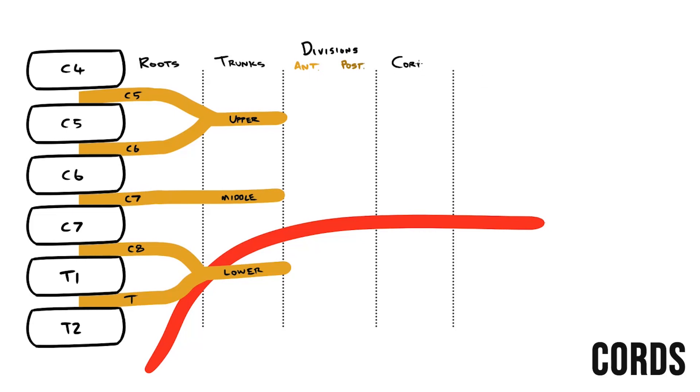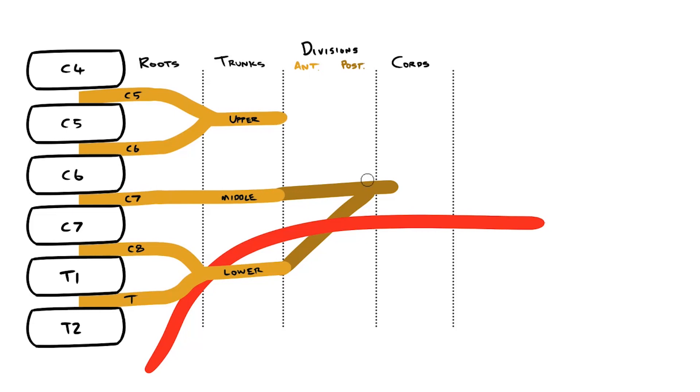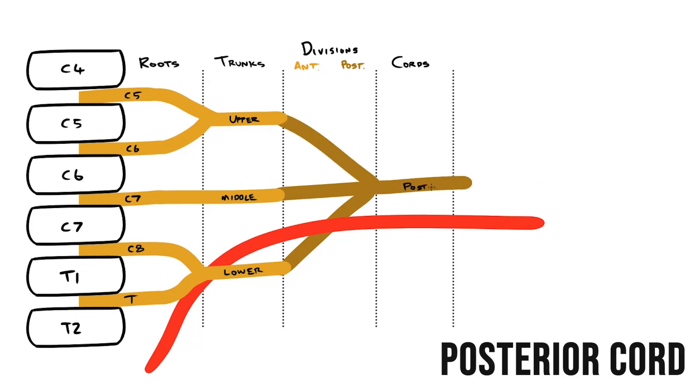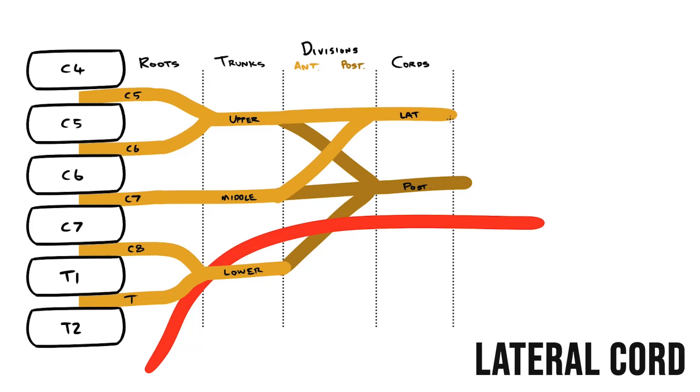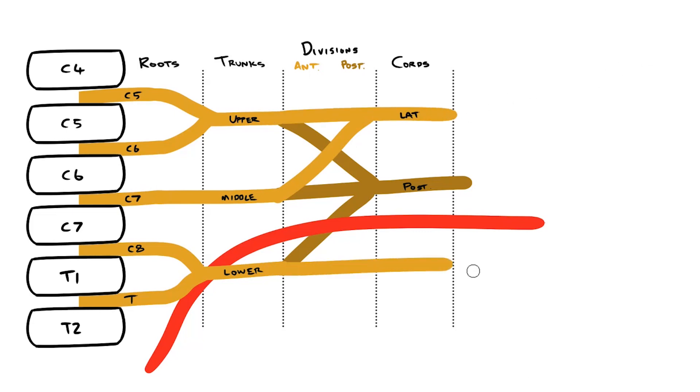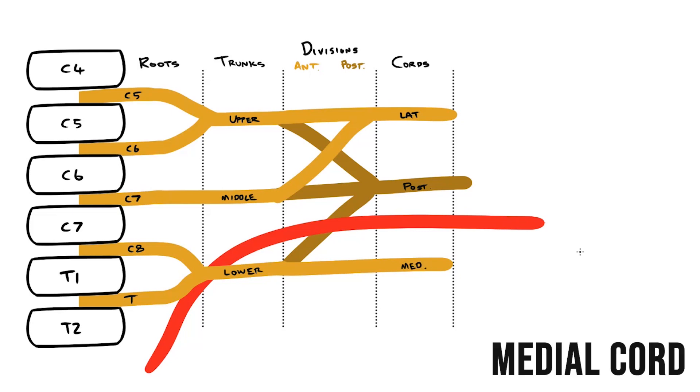These divisions form our cords. All three posterior divisions come together behind the artery to form the posterior cord. The upper two anterior divisions unite to form the lateral cord, and the inferior anterior division continues as the medial cord. Again, these are named after their relationship to the axillary artery. Although our illustration shows them lying above and below that artery, in reality all of these structures curve around as they enter the upper limb, leaving these cords in lateral and medial positions.